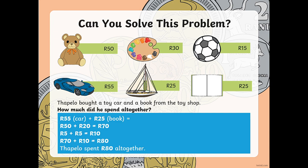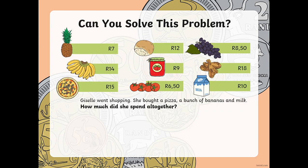Therefore, Tapelo spent 80 rand altogether. Make sure you understand that while we are breaking up each step, it makes it easier for us to understand and add our money values all together. Our next one — if you need to pause the video at any stage please do so and write down your sum and your sum sentence.